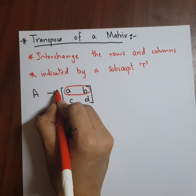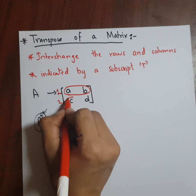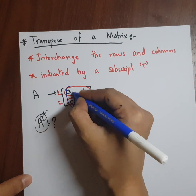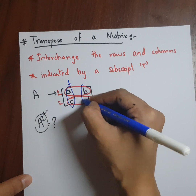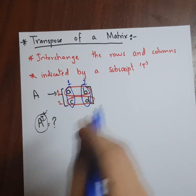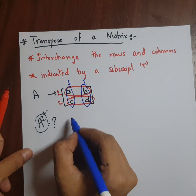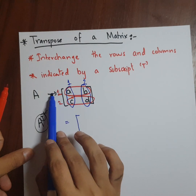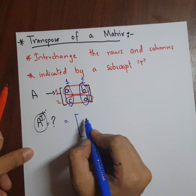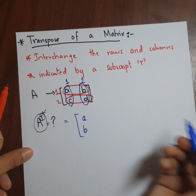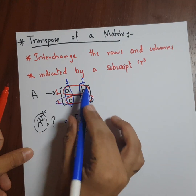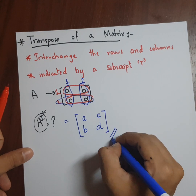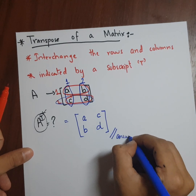This is my first row and this is my second row, here is my first column and this is my second column. Now what I'll do for the transpose: I will take the first row and make it the first column, so it will be a, b, and I'll take the second row and make it the second column. So this will be my answer.